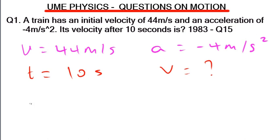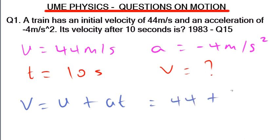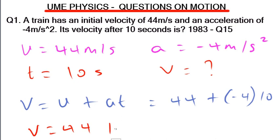The final velocity is what we are looking for. The equation of motion best suited for this is v = u + at. Our u is 44 m/s, our acceleration is -4, and our time is 10. So our final velocity v = 44 + (-4 × 10) = 44 - 40 = 4 m/s. Our answer is 4 m/s, which is the final velocity after 10 seconds.